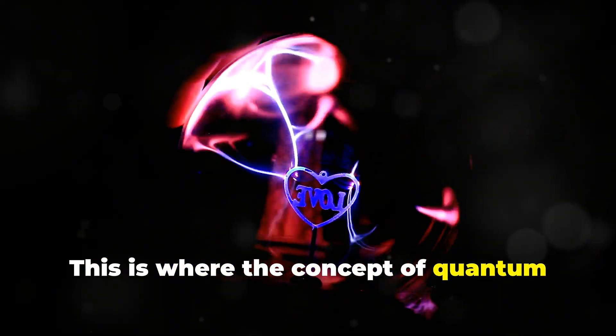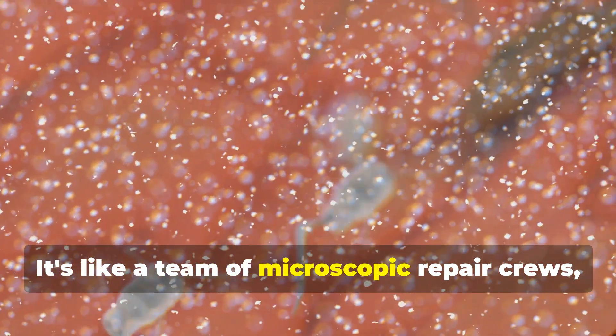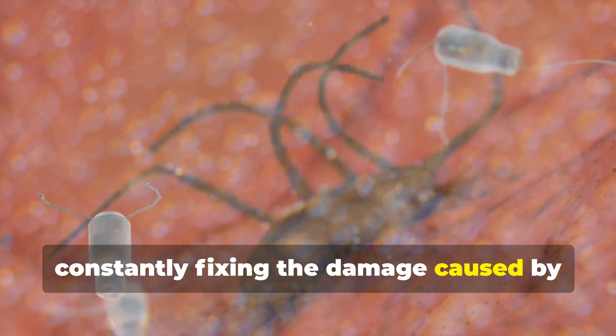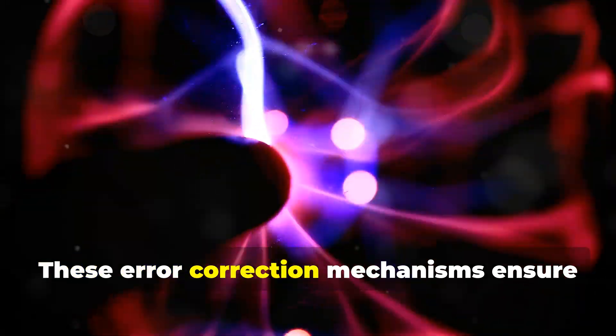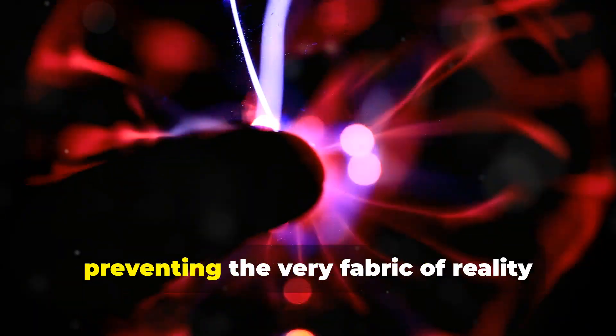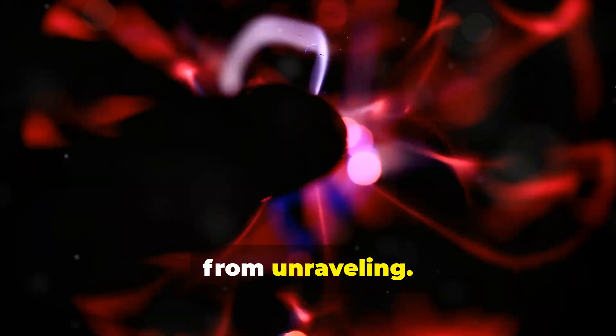This is where the concept of quantum error correction comes in. It's like a team of microscopic repair crews constantly fixing the damage caused by noise and entropy. These error correction mechanisms ensure that quantum information is preserved, preventing the very fabric of reality from unraveling.